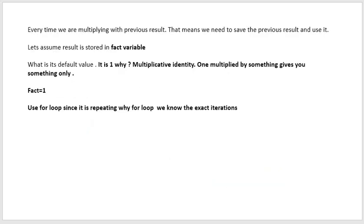For that reason, we take a variable called 'fact' where it will store the factorial of a number. What is the default value of fact? We need to initialize it — because it will have a garbage value. So we initialize it to 1. Why 1 and not 0? Because every time you are multiplying your result with another number — if you take fact as 0, then 0 into anything is 0 only. That is why we take 1, and we call 1 the multiplicative identity.